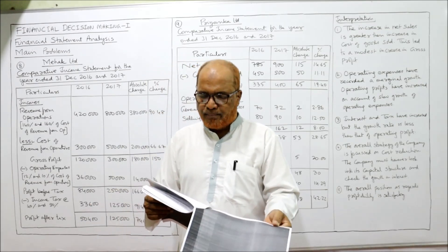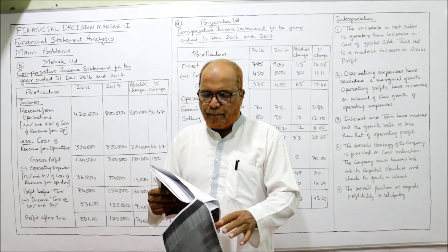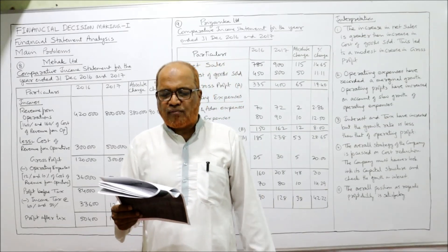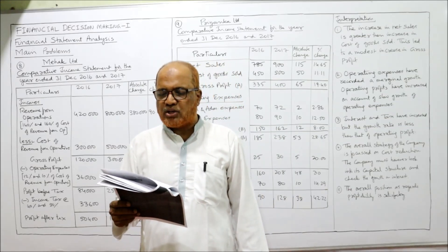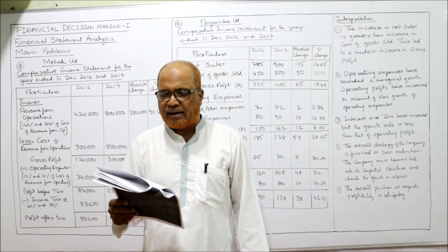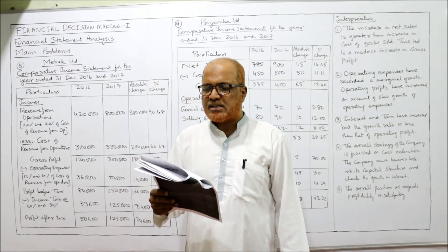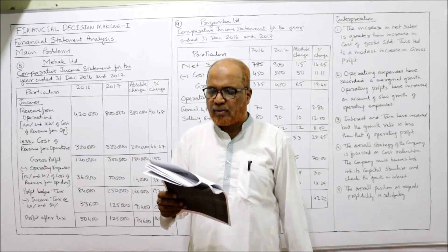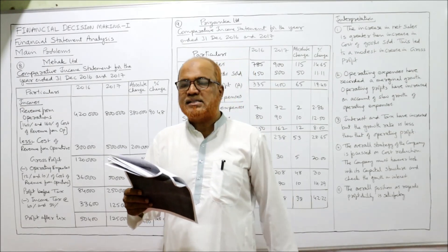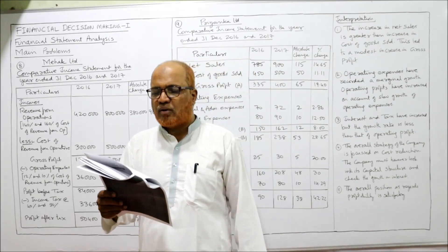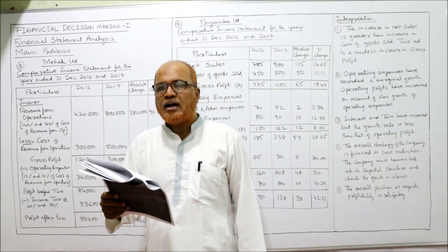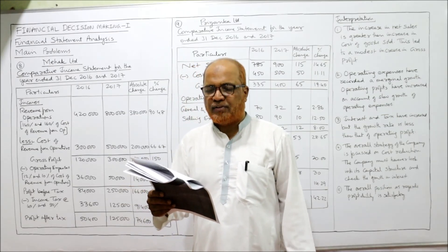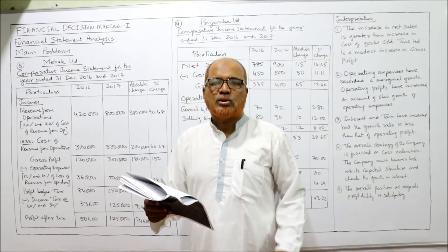The next details given: purchases are 4,50,000 and 2,50,000; cost of revenue from operations is last year 3 lakh, current year 5 lakh. Operating expenses are last year 12% of cost of revenue from operations and current year 10% of cost of revenue from operations. Income tax rate: last year 40%, current year 50%.